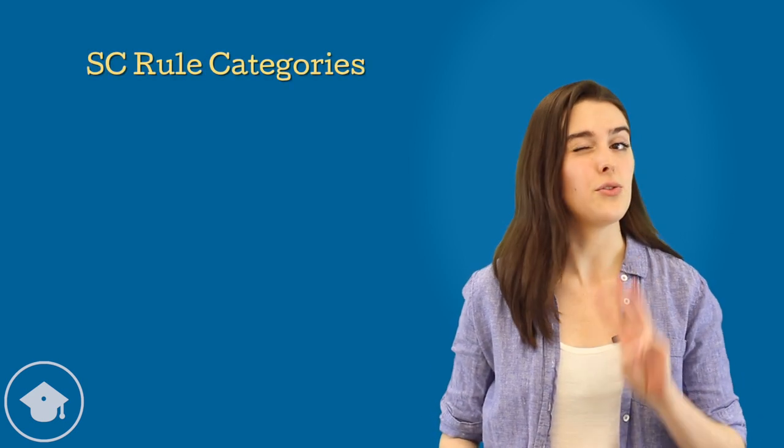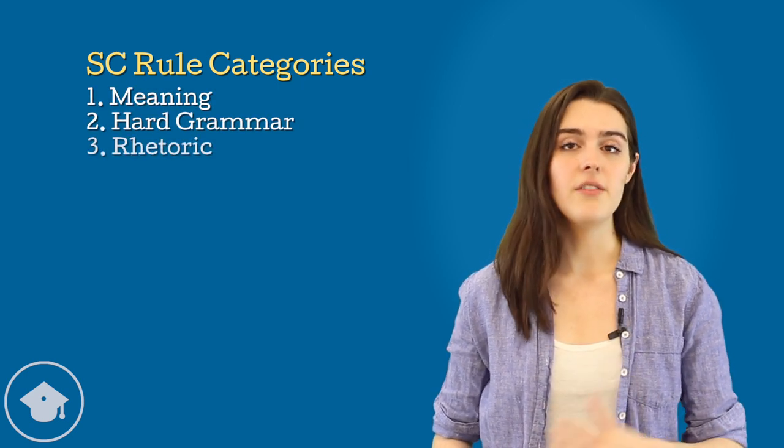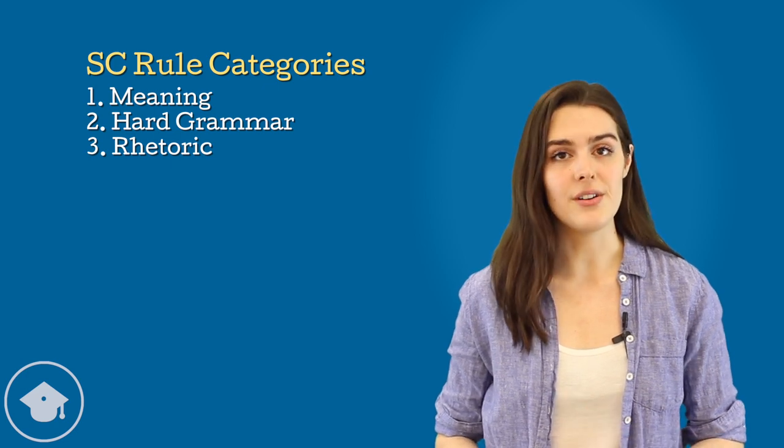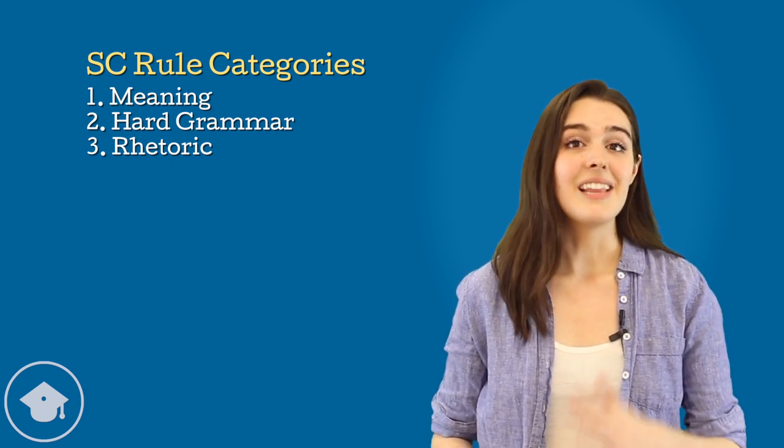We can prioritize sentence correction rules by breaking them down into three categories: meaning, hard grammar, and rhetoric. Of these, meaning is the most important, followed by hard grammar, and then finally rhetoric. Let's break down what these categories mean and which rules fall under each.